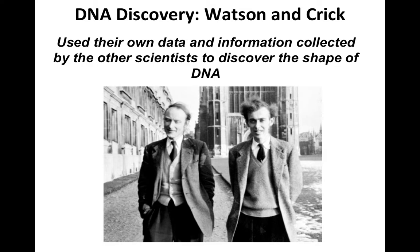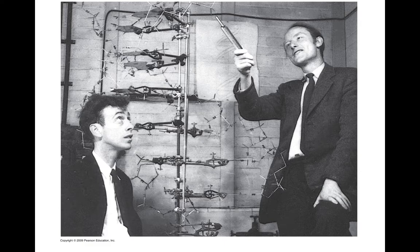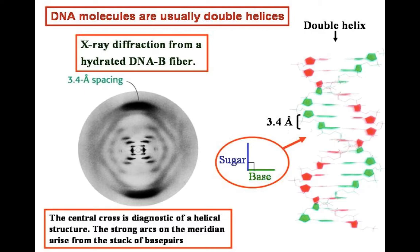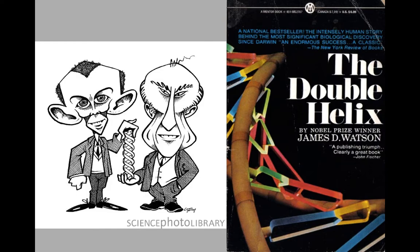They ended up winning a Nobel Prize for it. Poor Rosalind Franklin didn't get much credit for anything she did — though years after she passed away, everyone acknowledged that her X-ray was critical. If they hadn't seen that X-ray, they wouldn't have known. They wrote a book called The Double Helix and won a Nobel Prize, and one of them reportedly works at UNC Chapel Hill.